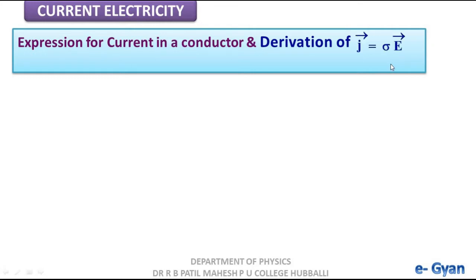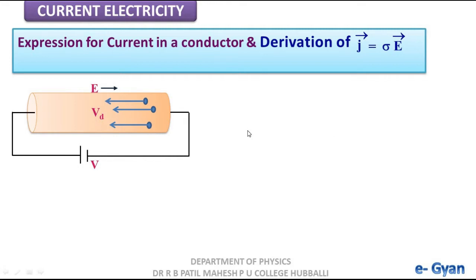We will derive J equal to sigma into E, where J is current density, sigma is electrical conductivity, and E is electric field. First we will derive the expression for current. Consider a conductor connected to a battery of voltage V. This potential difference sets up an electric field in the conductor, causing free electrons to experience a force and move towards the positive end with drift velocity Vd, and this motion is responsible for the current.